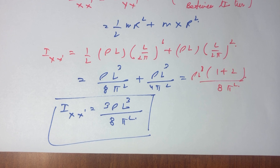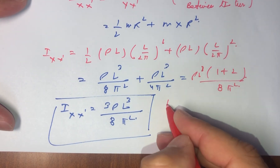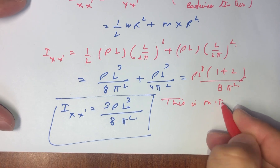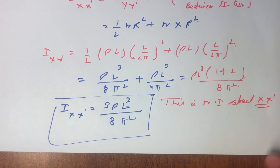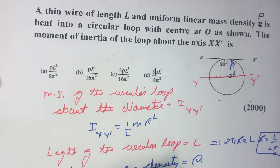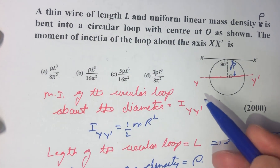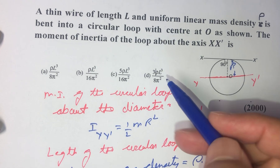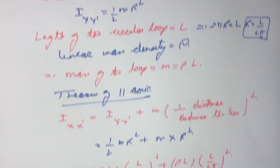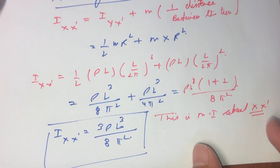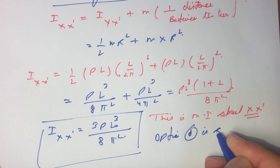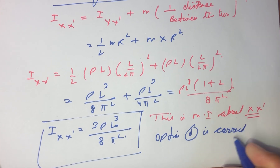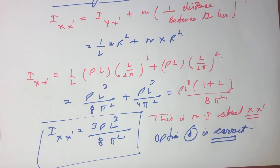The moment of inertia about the x-x' axis is equal to 3ρl³ / 8π². From here we can say that option D is the correct option. This completes the question, thank you.